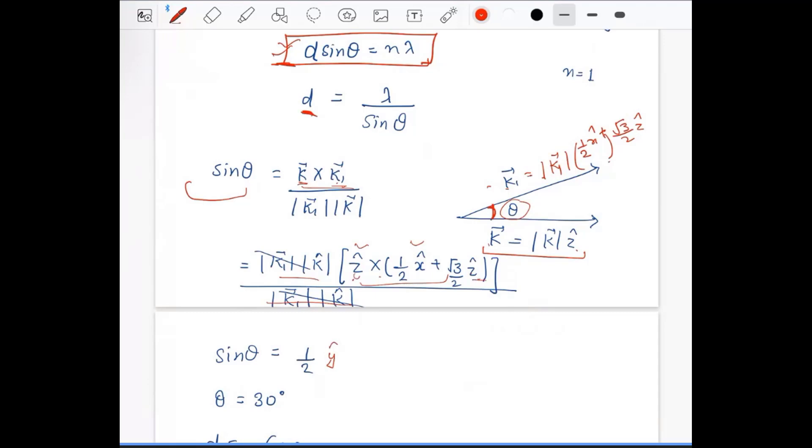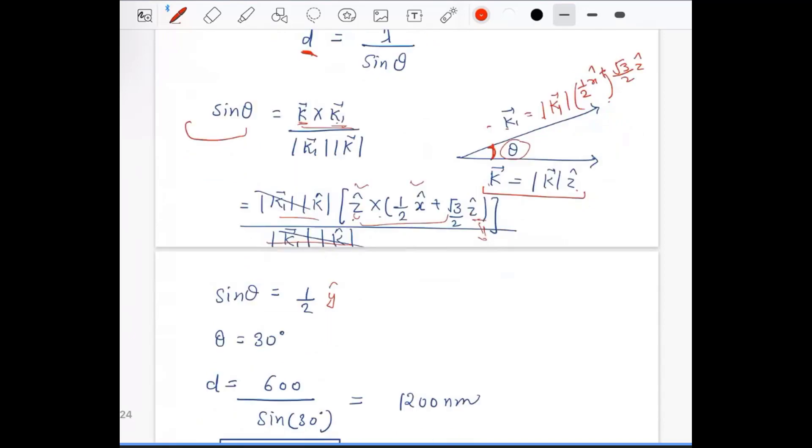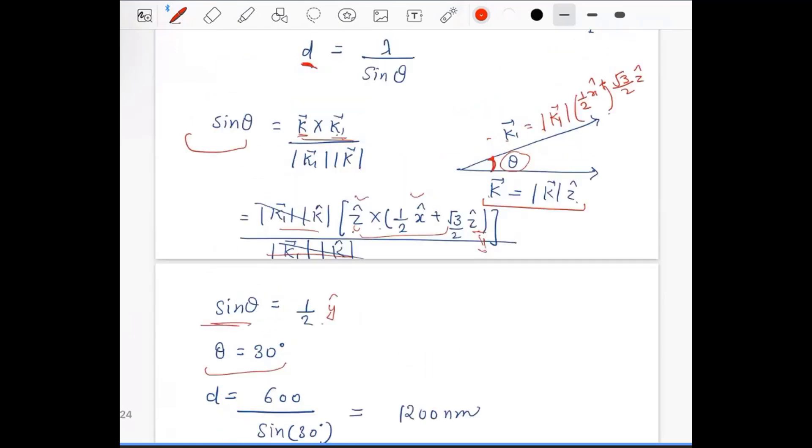So sin θ becomes sin⁻¹(1/2), which is 30 degrees. And when you put this into the expression d = λ/sin θ.